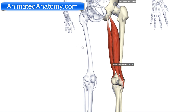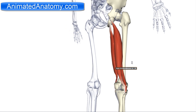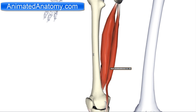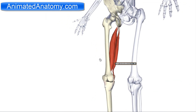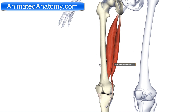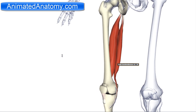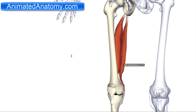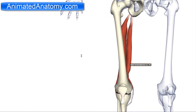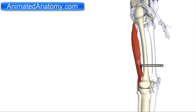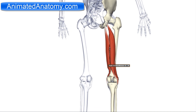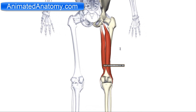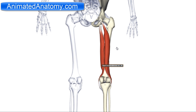The semitendinosus muscle has its insertion on the pes anserinus. In a previous lesson I mentioned the sartorius muscle, which also had its insertion on the pes anserinus. The pes anserinus is actually the connective tissue of the joint insertion of three muscles: in our case the semitendinosus, the sartorius from the previous lesson, and the gracilis muscle, which I will explain a little bit later.